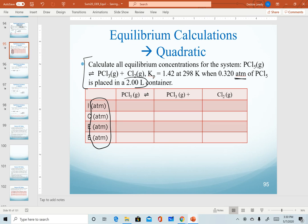We are given the volume of the container, but we don't need to use that with our pressures. That is extraneous information. For this one, we are told we're starting with 0.320 atmospheres of PCl5, which means we assume we have zero of our products.